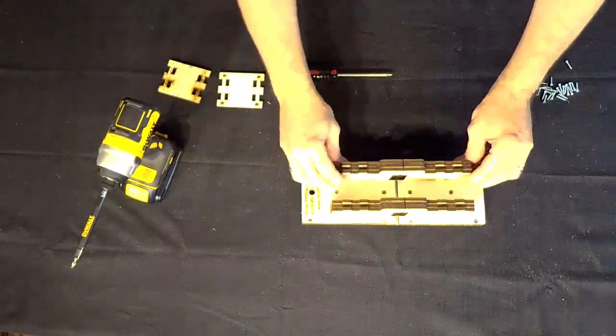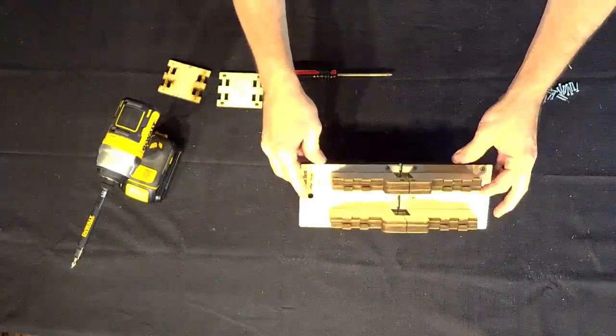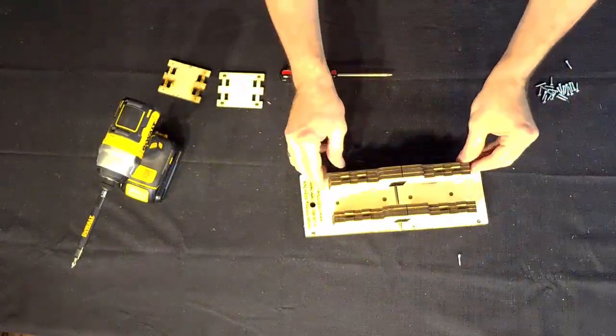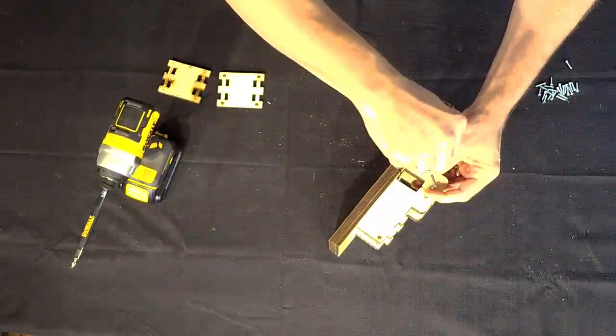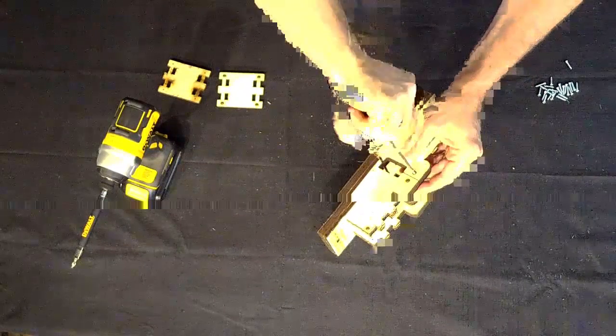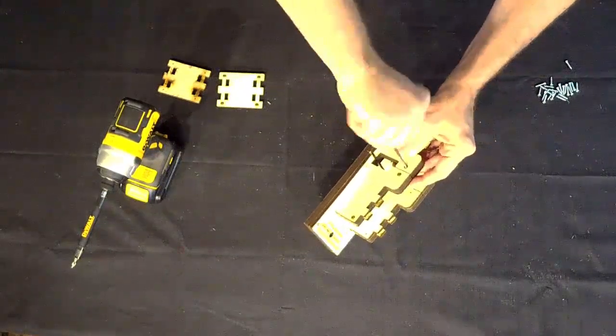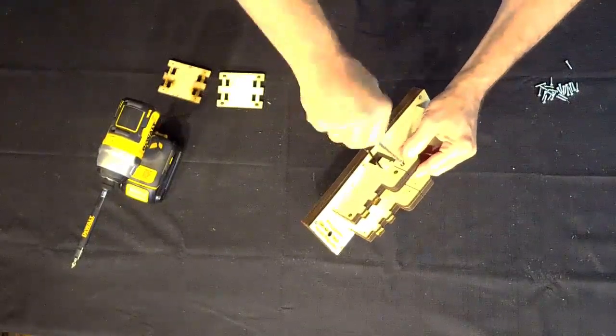Next you can begin inserting the screws into the side panels. Make sure the side panel pieces are lined up as neatly as possible before proceeding. Hold the pieces together while inserting the screw to get a nice tight join.